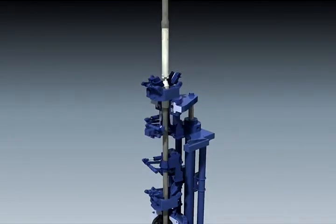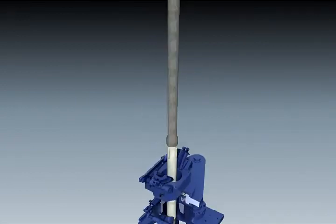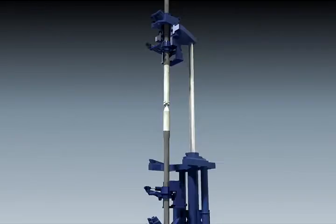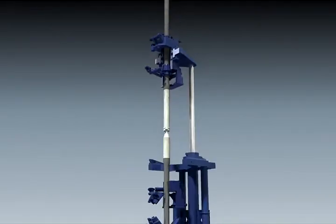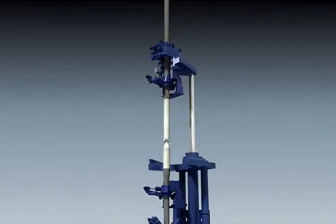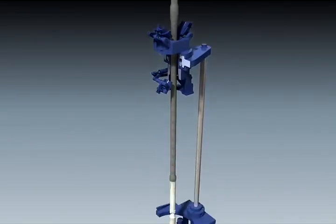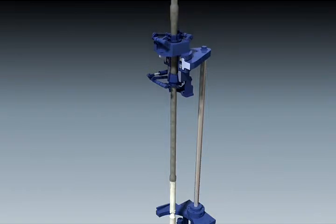Pre-job calculations are also performed to ensure snub forces are within pipe and tool specifications for buckling. This animation shows a casing packer being snubbed in with the lower stripping rams in the closed position and all upper BOPs in the open position.